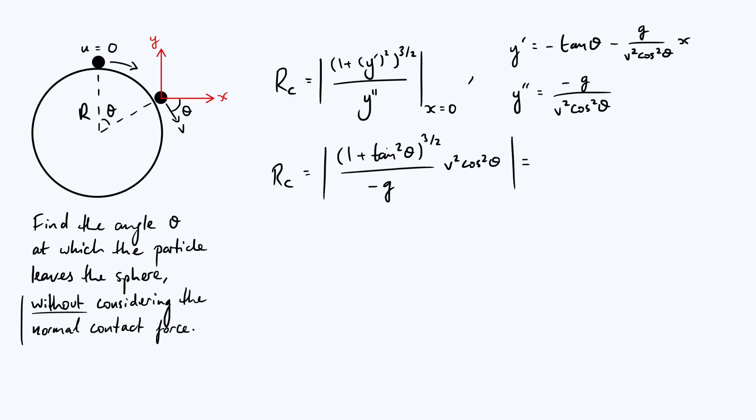We can use a trig identity that says 1 plus tan squared is sec squared. Then sec squared to the power of 3 over 2 gives sec cubed. Putting all that together you've got v squared over g, the minus sign disappears because we're taking the modulus, then that sec cubed factor and a cos squared factor. By definition sec is 1 over cos and this simplifies very nicely to just v squared over g cos theta.